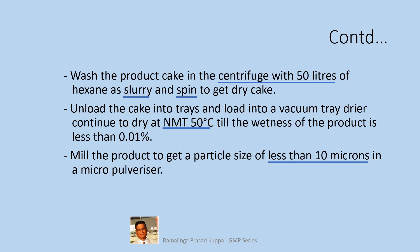Mill the product to get a particle size of less than 10 microns in a micro-pulverizer. If the product is required to be pulverized to a very low particle size of less than 10 microns, the risk from the mill is heat generated during the milling process. Since the mill runs at very high speed, there is a risk of temperature shooting up abnormally, which could cause the product to melt and lose its characteristics. The mitigation plan is on selection of the right type of pulverizer — one that has a provision for a coolant to keep the mill under controlled temperature during operation.